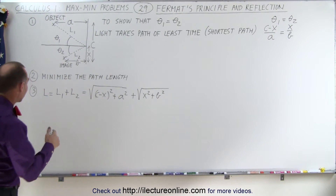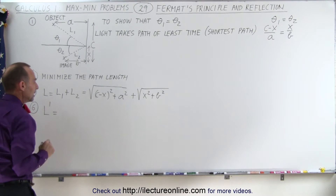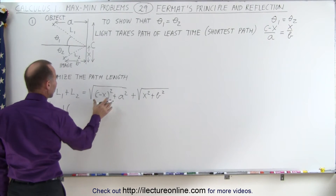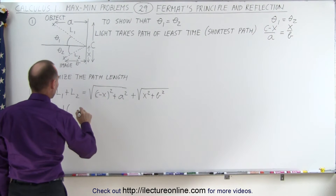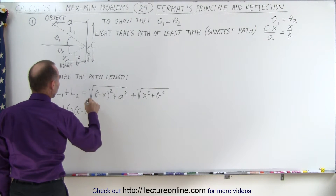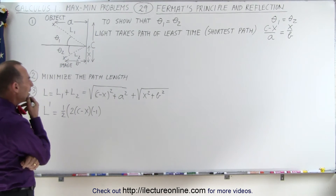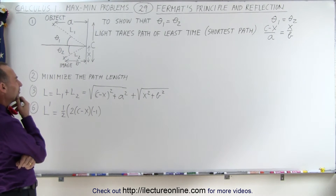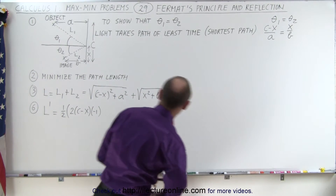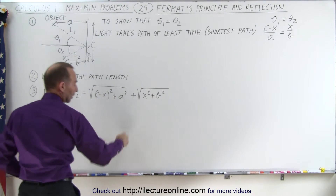We're now ready to go to step six, taking the derivative of the length. The derivative is going to be 1 half times the derivative of what's inside, which is 2 times (c minus x) to the first power times the derivative of what's inside, which is minus 1. I think I'll go ahead and multiply that out first, which may make for a cleaner equation.